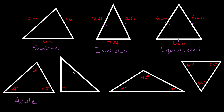Next we have this triangle right here. There's always going to be this dead giveaway with this little square symbol, which just means we have a right angle — also known as a 90 degree angle. So if you have a triangle that has a 90 degree angle, that's called a right triangle.